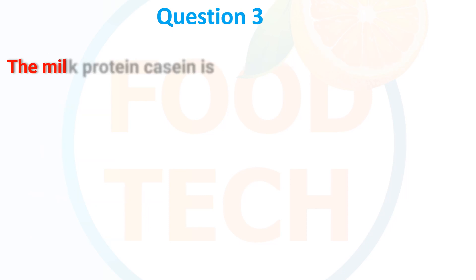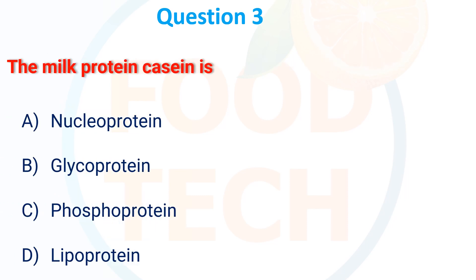The milk protein casein is: A. Nucleoprotein, B. Glycoprotein, C. Phosphoprotein, D. Lipoprotein. The correct answer is Phosphoprotein.